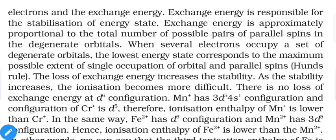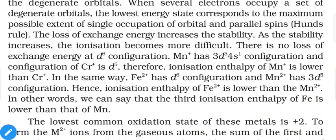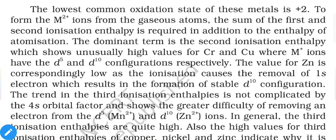The loss of exchange energy increases stability; as stability increases, ionization becomes more difficult. There is no loss of exchange energy at d⁶ configuration. Mn⁺ has a d⁵ 4s¹ configuration, while Cr⁺ has d⁵ — therefore the ionization enthalpy of Mn⁺ is lower than that of Cr⁺. Similarly, Fe²⁺ has d⁶ and Mn²⁺ has d⁵, so the ionization enthalpy of Fe²⁺ is lower than that of Mn²⁺ — meaning the third ionization enthalpy of Fe is lower than that of Mn.